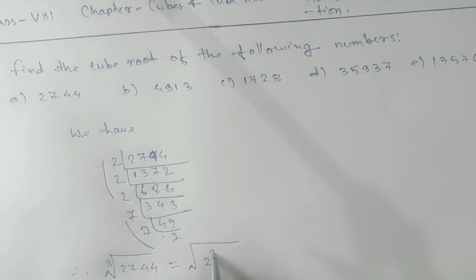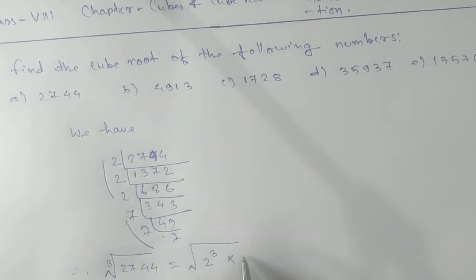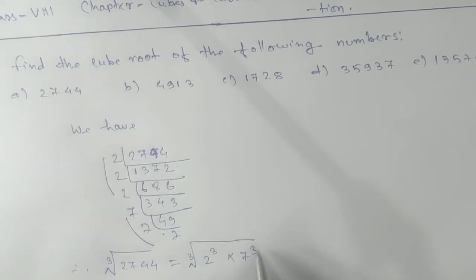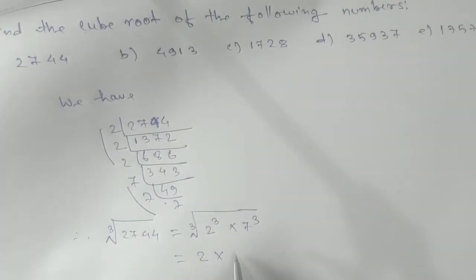So 2 to the power 3, and here we are getting 7 to the power 3. And from this we'll get 2, and from this one we're going to get 7.